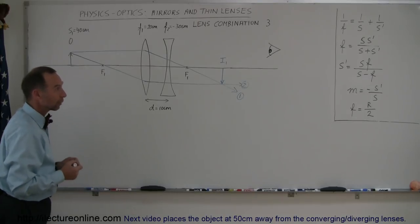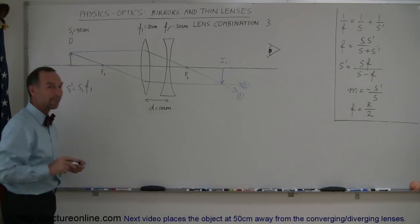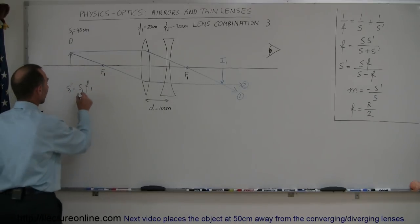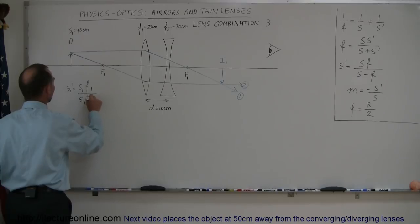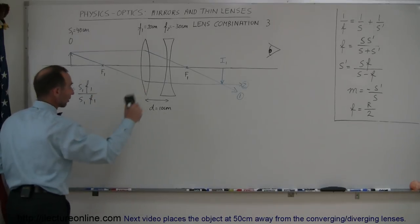Using our equation to quickly find out where that is, we can say that s1 prime is equal to s1 times f1, remember s is the object distance, f1 is the focal length of the first lens, s1 prime is the distance of the first image, divided by s1 minus f1, not plus, it's actually minus just like the equation says.